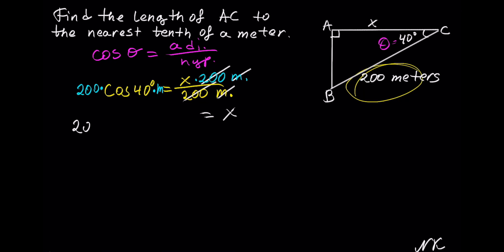200 times cosine of 40 degrees, and this is measuring in meters. So on the calculator, let's plug in 200 times cosine of 40 degrees.